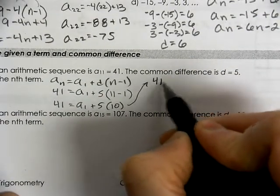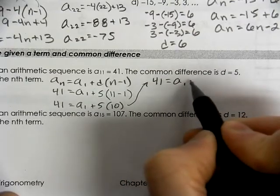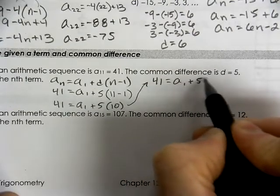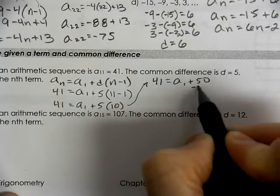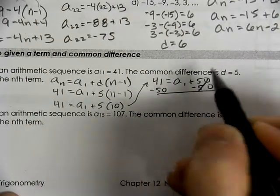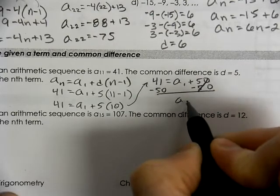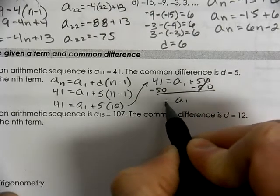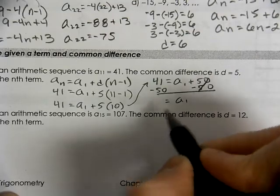So 41 equals a of 1 plus 5 times 10. So we have 41 equals a of 1 plus 50. So you subtract the 50 to the other side. And we're going to get negative 9.